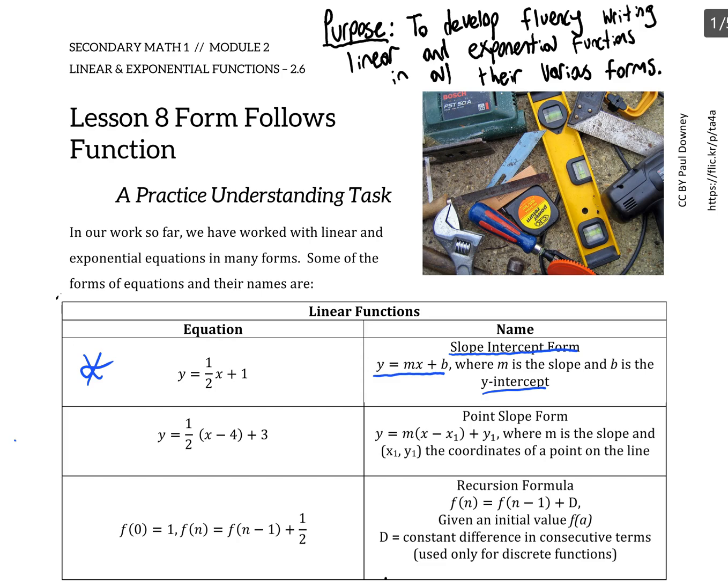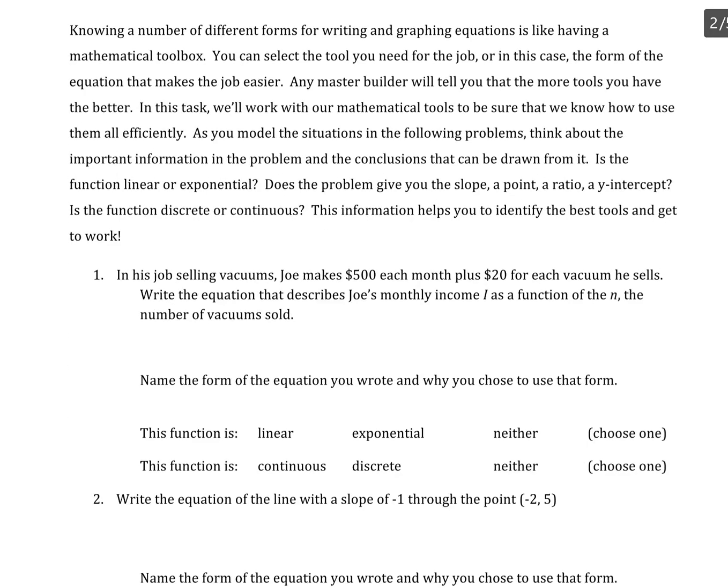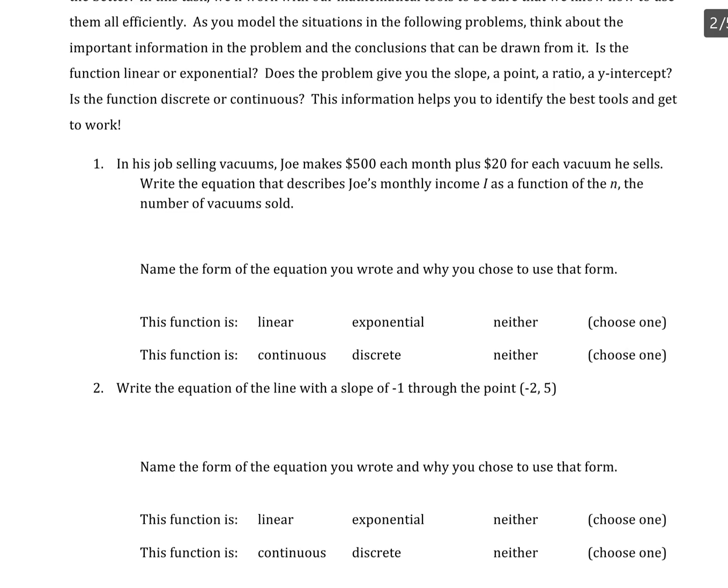Problem number one fits that case. It says in his job selling vacuums, Joe makes $500 each month plus $20 for each vacuum he sells. Write an equation that describes Joe's monthly income. His base pay of $500 each month is the y-intercept of the scenario, and the $20 for each vacuum is the slope. So instead of y and x, I'm using I and n, so I can write I = 20n + 500.